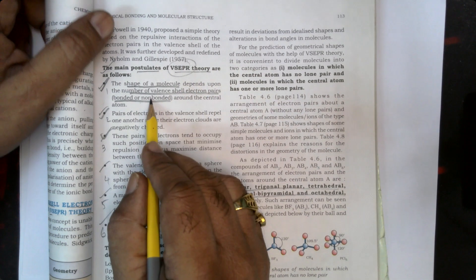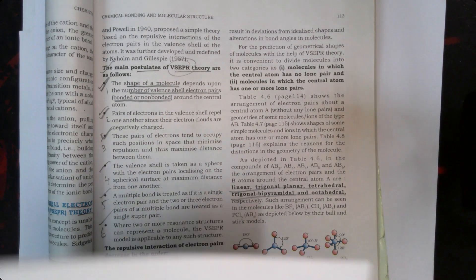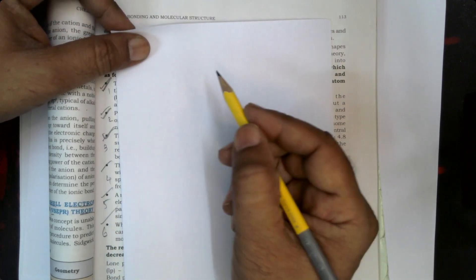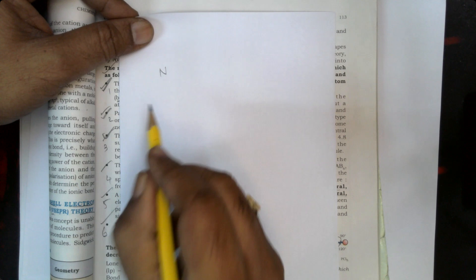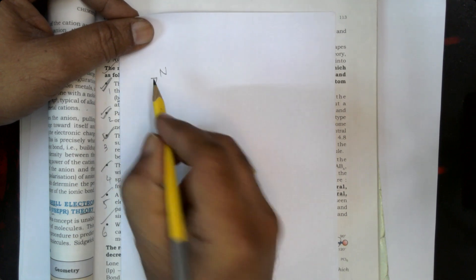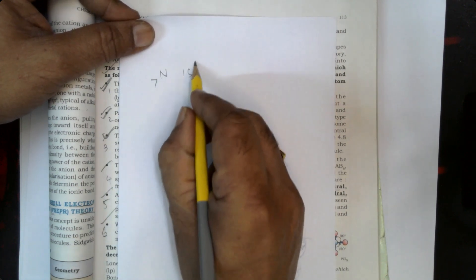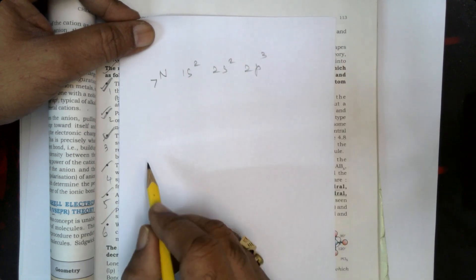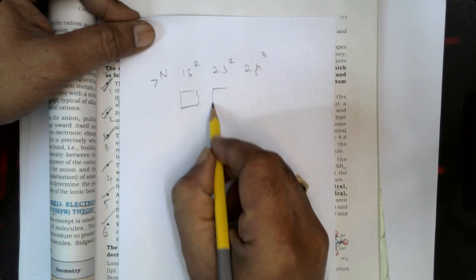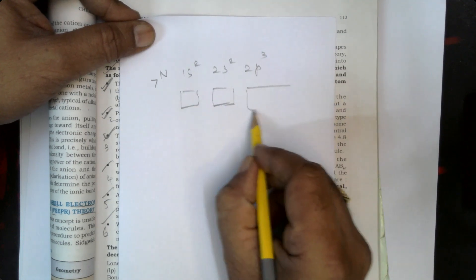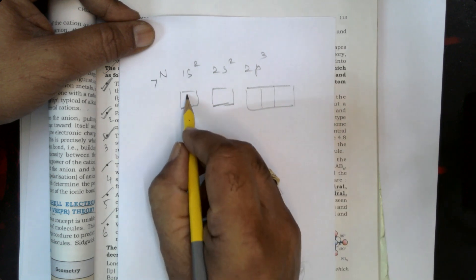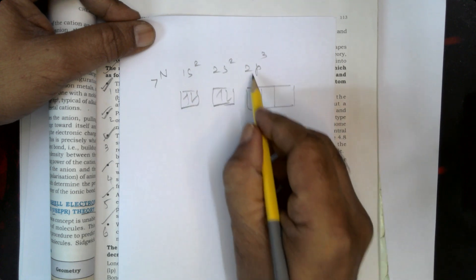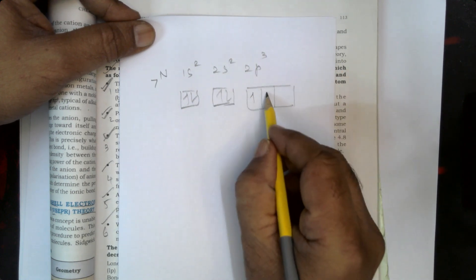From this you can understand there are two types of electron pairs. For example, let me consider nitrogen. The atomic number of nitrogen is 7: 1s², 2s², 2p³. In each orbital you have electrons with parallel and anti-parallel spin, and in the 2p you have three singly occupied orbitals — px, py, pz — with one electron each.